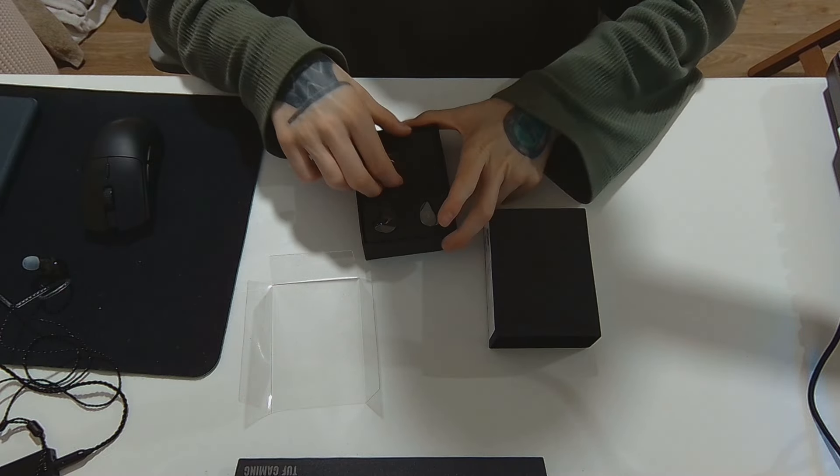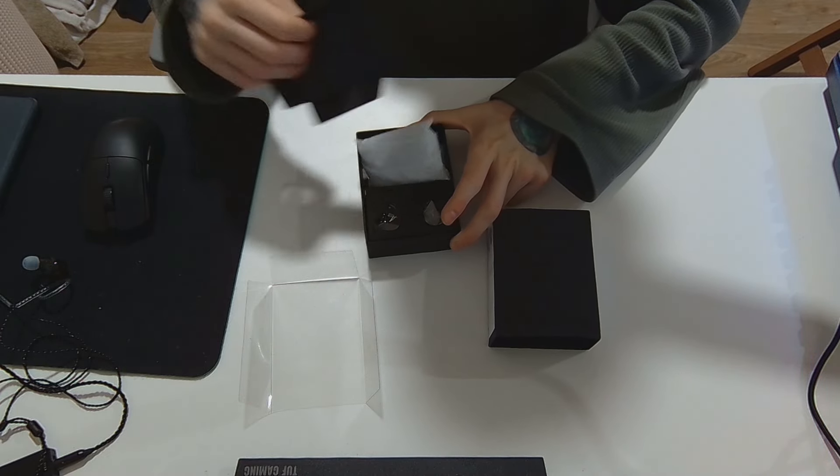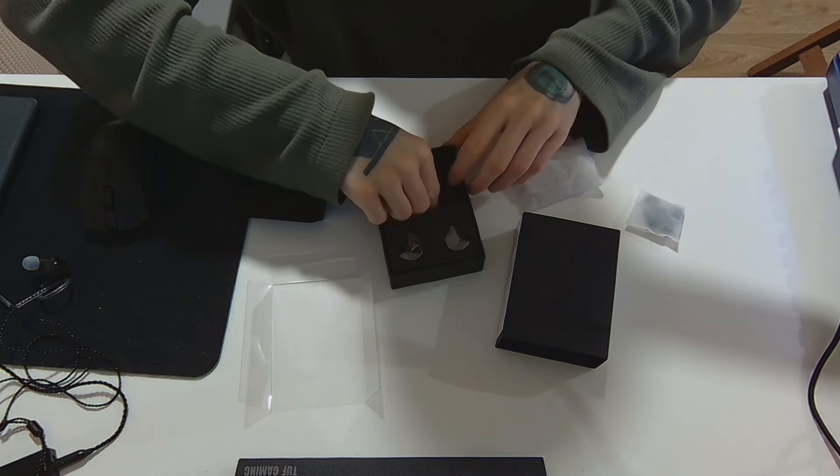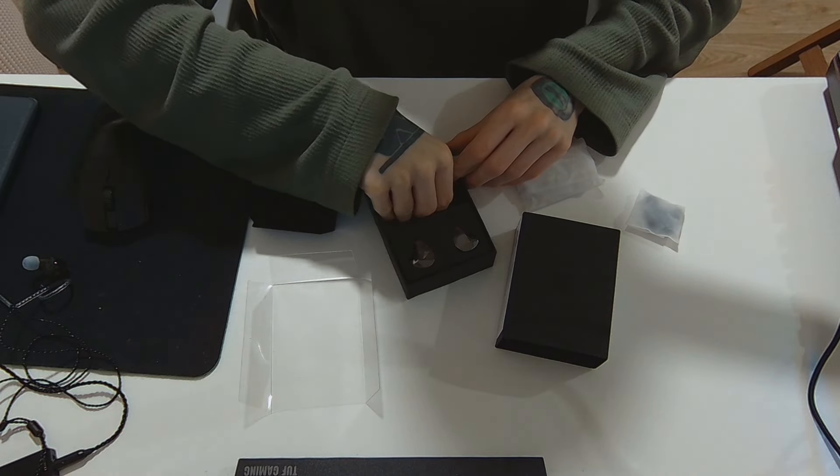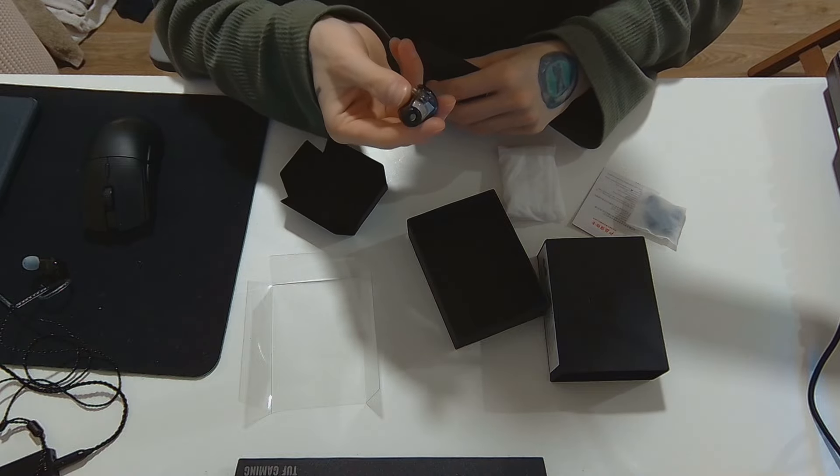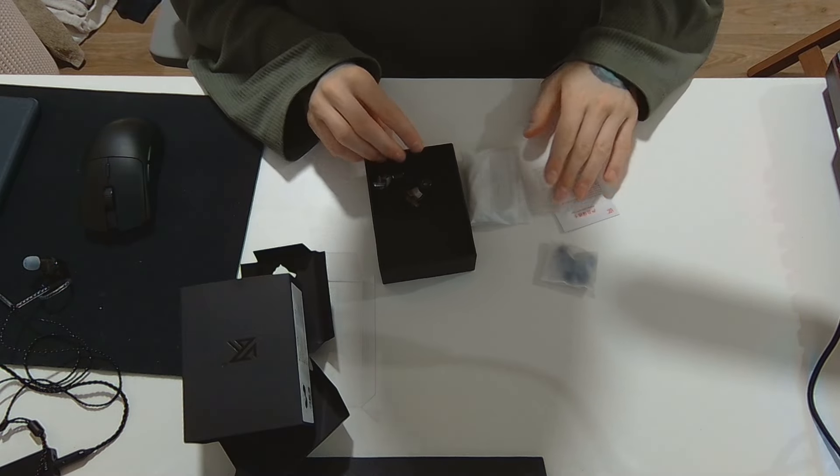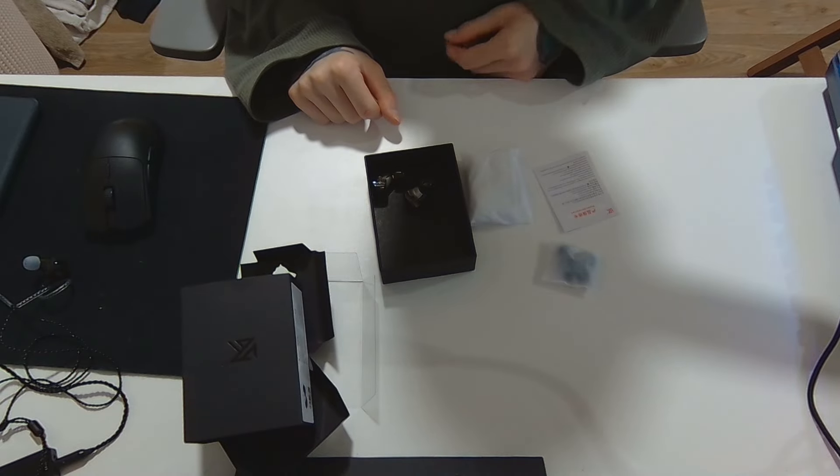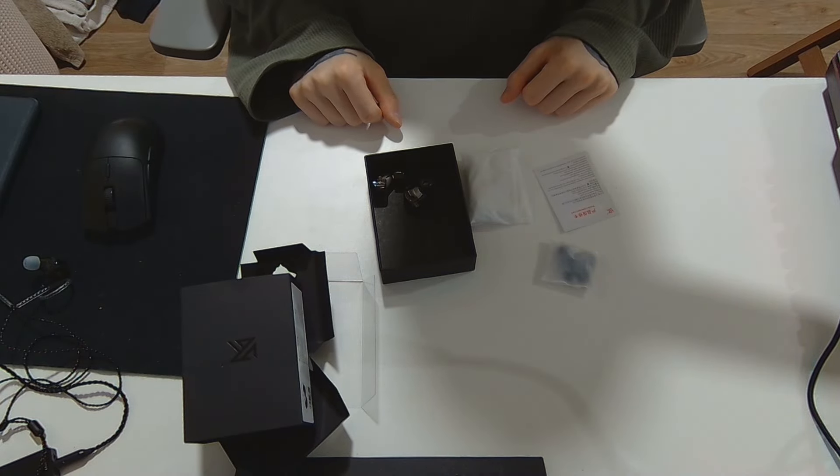I think these are the usual KZ ear tips, black cloth things. Oh, but you get foam tips, paper stuff, IEM ear tips, cable, nice little warranty card.